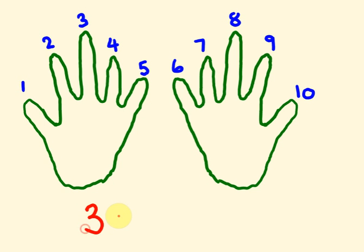Well say you're going to do a question like three times nine. We count to the third finger, one two three this finger here, and we'd fold this finger over.